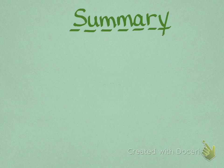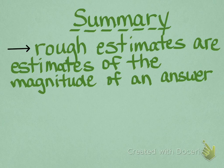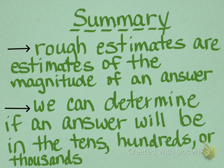So to summarize what we've talked about in this lesson, we looked at rough estimates. And rough estimates are estimates of the magnitude of an answer. So sometimes answers can be pretty big in scale. When we're talking about something for a whole year, that's pretty big. That's a lot to think about. So we kind of have to make a rough estimate to help us answer those kinds of questions. We can determine if an answer will be in the tens, hundreds, or thousands, and even bigger in some instances.